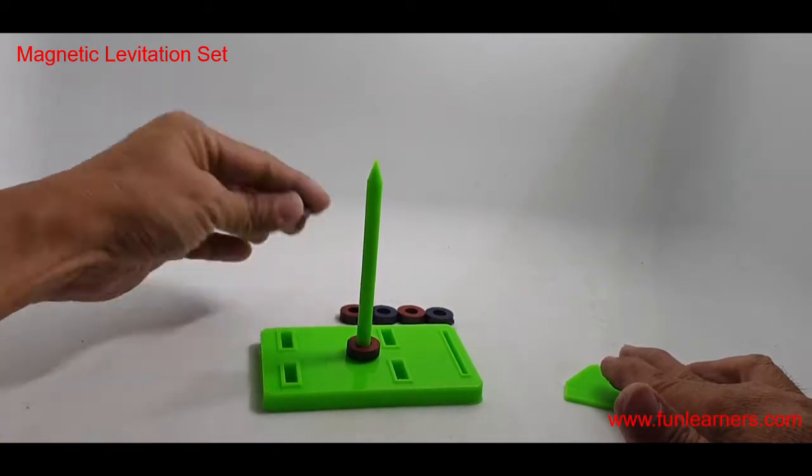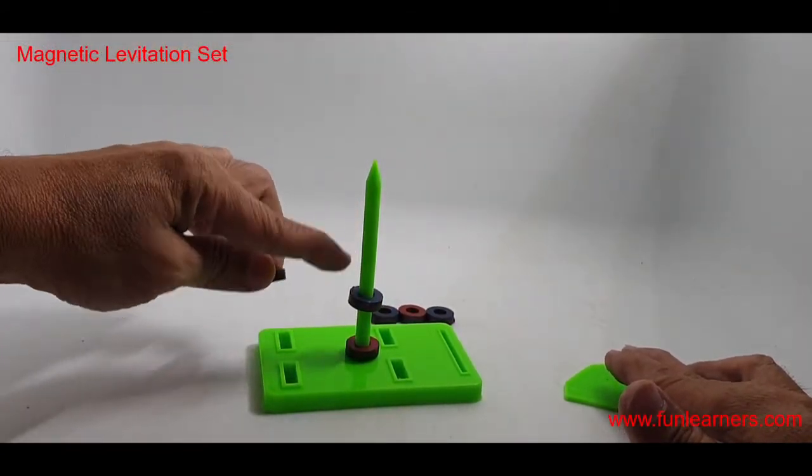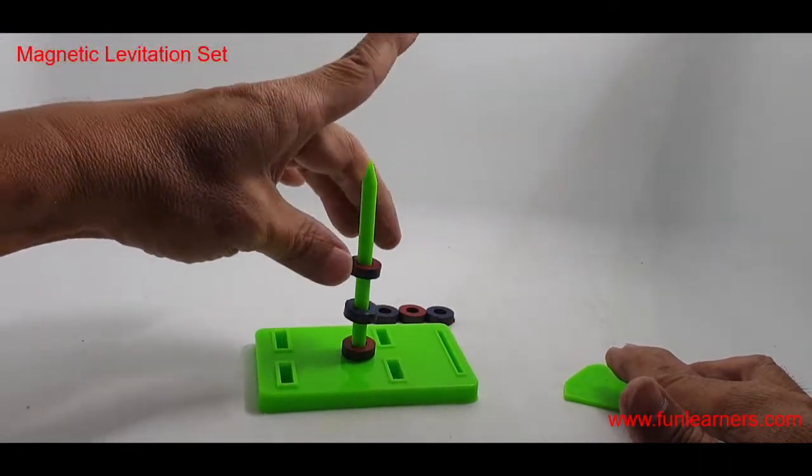This is North Pole. So we have North Pole to cover it. South Pole. The blue one represents the South Pole.